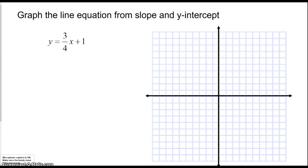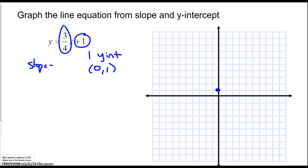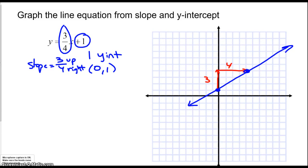Here's another example with a fractional slope. The number out here, 1, is the y-intercept, so the point 0, 1 is on the line. The slope is 3 fourths, meaning I go 3 up for every 4 to the right. So from 0, 1 I go up 3 and right 4 to get a second point, then draw a line through those two points.